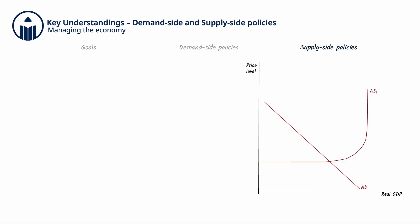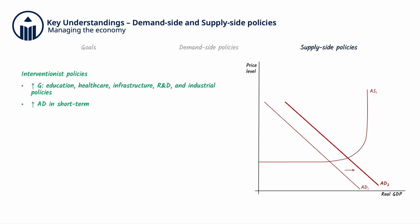On the other hand, interventionist supply-side policies are all based on increased government expenditure on education, healthcare, infrastructure, and research and development, as well as industrial policies. Interventionist policies increase aggregate demand (AD) in the short term, as they involve increased government expenditure, which is a direct component of AD. The demand-side effects are shown as the rightward shift from AD1 to AD2.